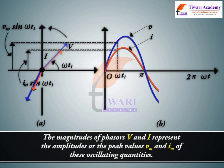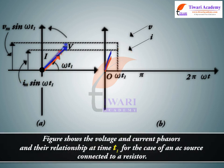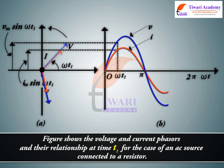The magnitudes of phasors V and I represent the amplitudes or the peak values Vm and Im of these oscillating quantities. Figure shows the voltage and current phasors and their relationship at time T1 for the case of an AC source connected to a resistor.